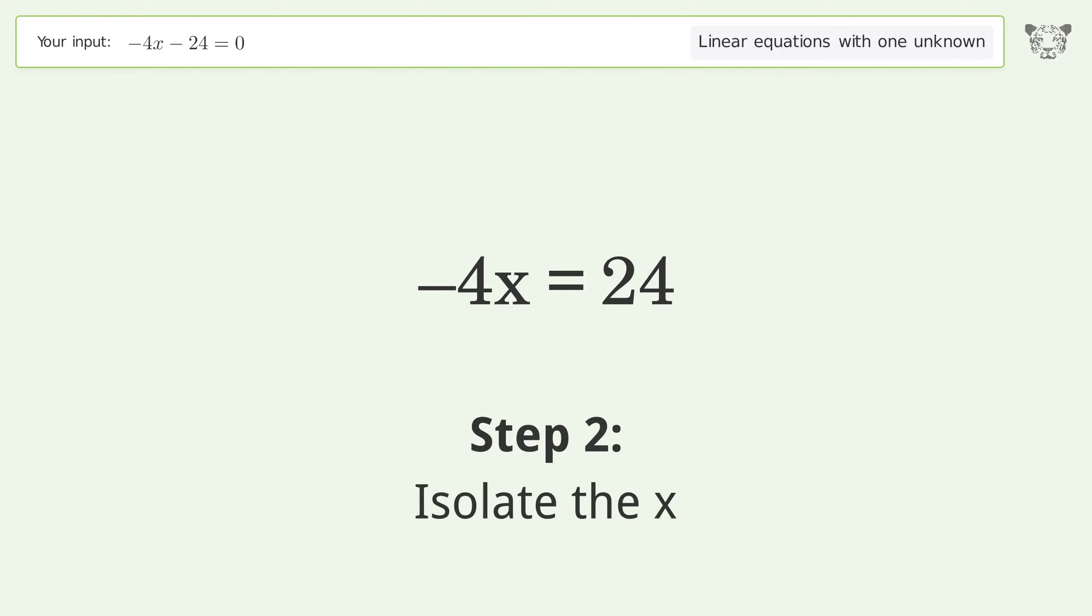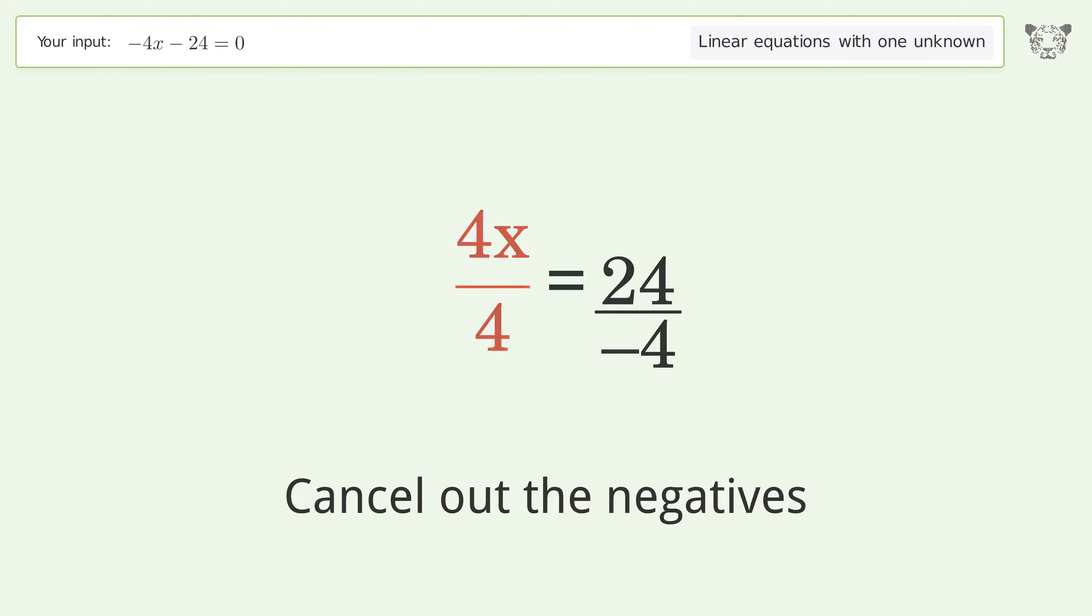Isolate the x. Divide both sides by negative 4. Cancel out the negatives. Simplify the fraction.